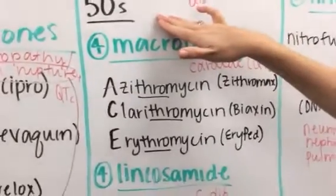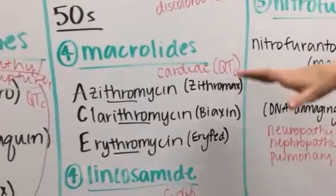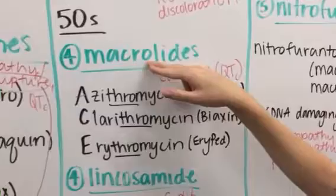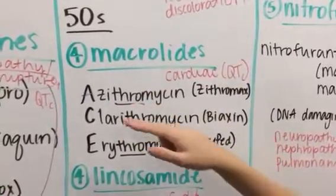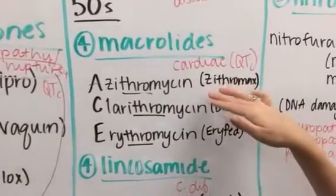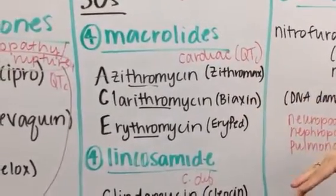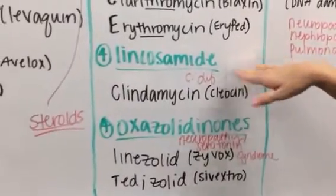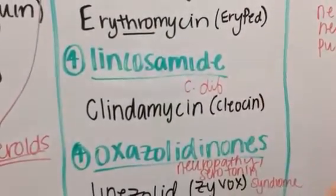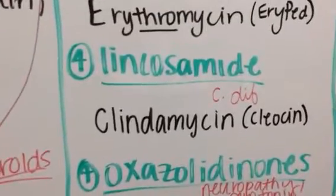Moving to the 50S ribosomal subunit, we have three medication classes. First are the macrolides — I remember these by the '-thromycin' ending: azithromycin, clarithromycin, and erythromycin. The main side effect is QTc prolongation — think cardiac side effects. Next is the lincosamide class, which is just clindamycin (Cleocin). The major concern here is C. difficile, and there is a black box warning on clindamycin for C. diff.